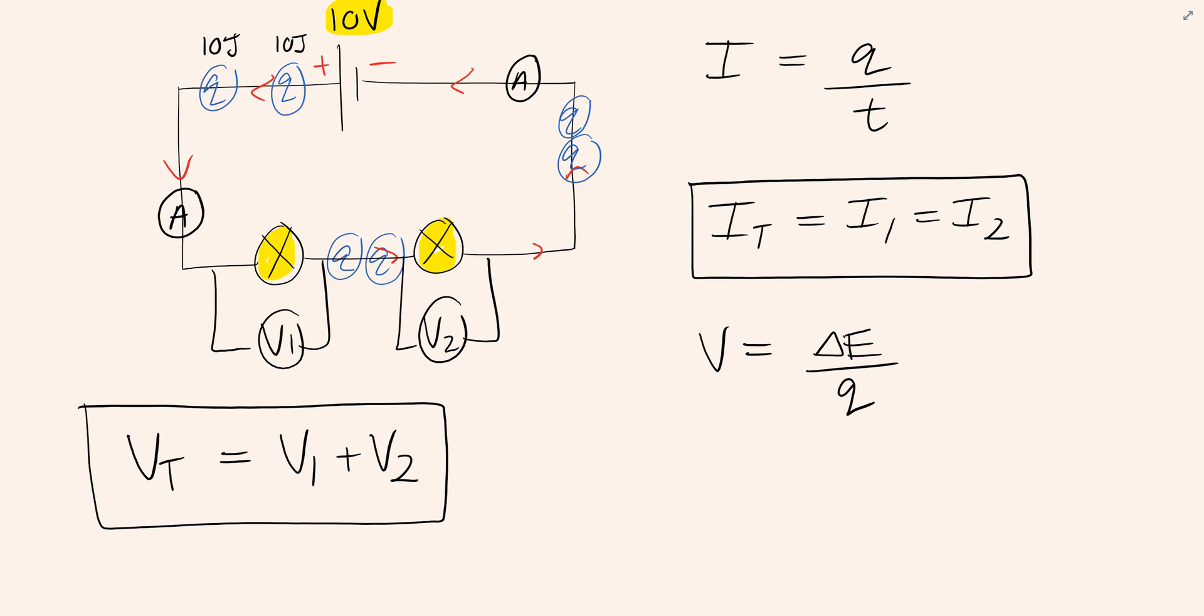So as a quick summary, in a series circuit, the current is the same everywhere in the circuit, and for a series circuit, the voltage is shared between components in the circuit.